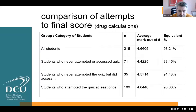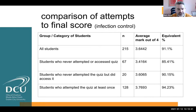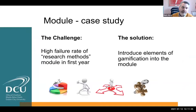We wanted to see if this was just a coincidence or linked to the particular topic, so we looked at infection control. Those who had never attempted the quiz scored 85.41%, but it shot up to 94% for those who did engage. Our conclusion was that students who engaged with these quizzes and were given this freedom to fail — it was only one activity within that module — showed more engagement and better attainment at the end of the day.